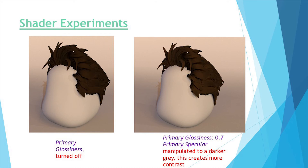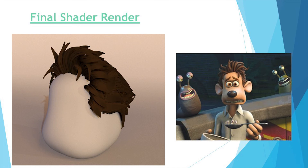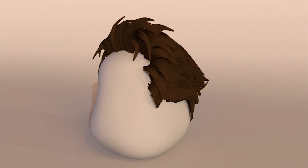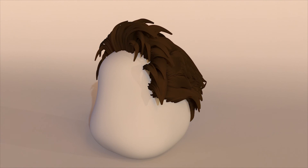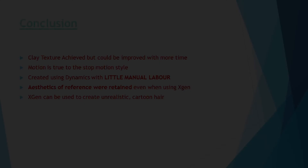To conclude, I believe that I achieved my aim of recreating the Flushed Away Aardman aesthetic to a large extent. On the whole, I think I did reproduce the clay texture of the hair, but the shading could be improved to appear more unnatural. Perhaps using a ramp node to control the highlights of the hair, and the strands could appear more round rather than angular. Also, I believe the motion has a nice bounce, but retains the stiffness, as seen in the original movie. And ultimately, this was created through simulation, with little manual labour, and therefore very efficient to produce.